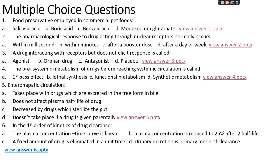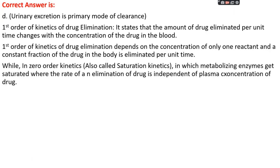Question number six: in first order kinetics of drug clearance — option A: the plasma concentration-time curve is linear, option B: plasma concentration is reduced to 25% after two half-lives, option C: a fixed amount of drug is eliminated per unit time, or option D: urinary excretion is the primary mode of clearance. The right answer is option D, urinary excretion is the primary mode of clearance.